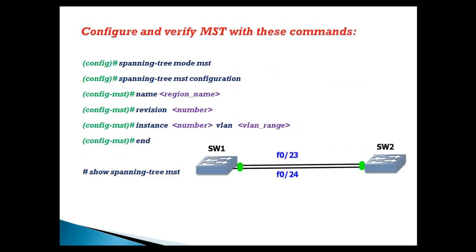For configuration, the first command is 'spanning-tree mode MST'. With this command we are going to change the default per-VLAN spanning tree mode into MST mode, and then we need to get into the MST configuration sub-mode.